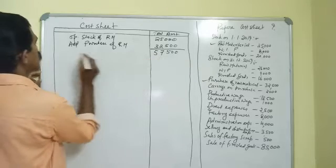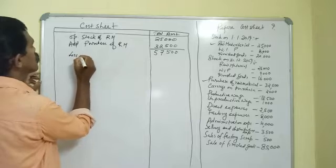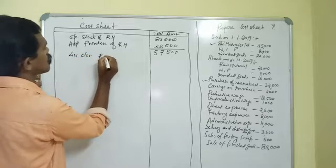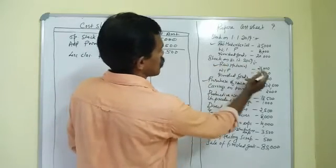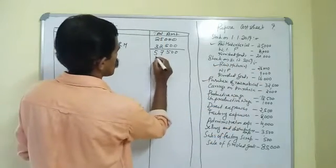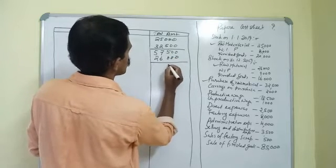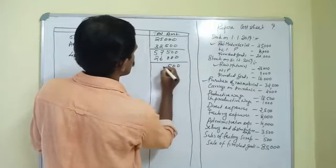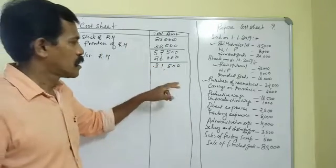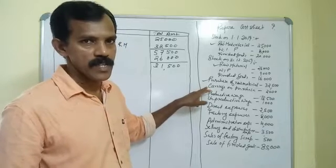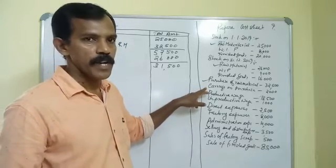From this total we deduct closing stock of raw material, which comes to 26,000. The difference is 31,500. Then carriage on purchase — carriage on purchase is also part of material consumed.